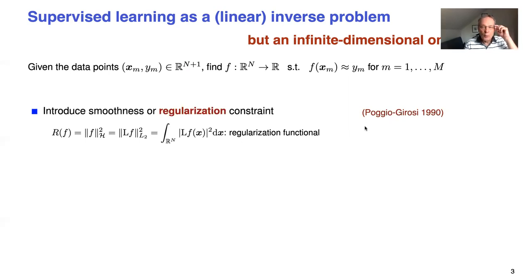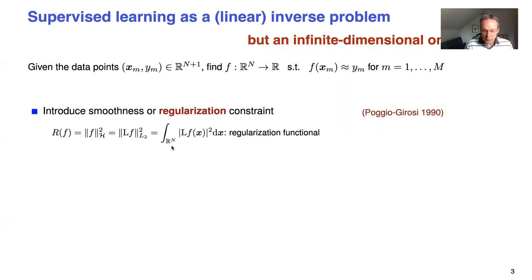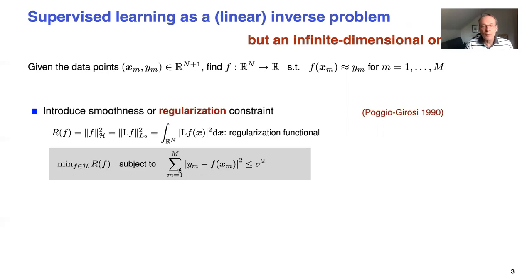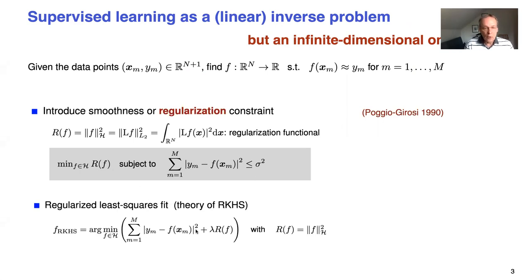Since this is ill-posed, people early on in machine learning — Poggio for instance — introduced the concept of regularization, trying to favor solutions such that a certain energy is not too large. This energy is given by an operator applied to the function, squared, and integrated over the domain since we're in the continuum. You can formulate the problem as ensuring consistency between your learner and your training data, and looking for the solution that, subject to this constraint, minimizes your regularization function. With Lagrange multipliers, you can recast that in a more familiar form.